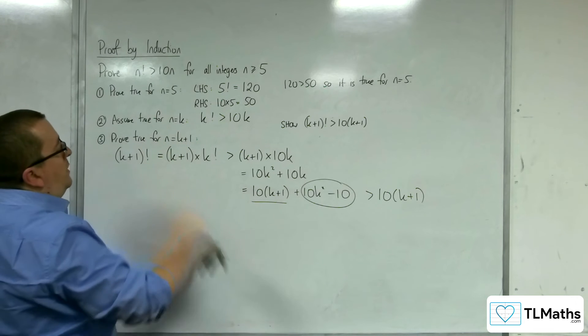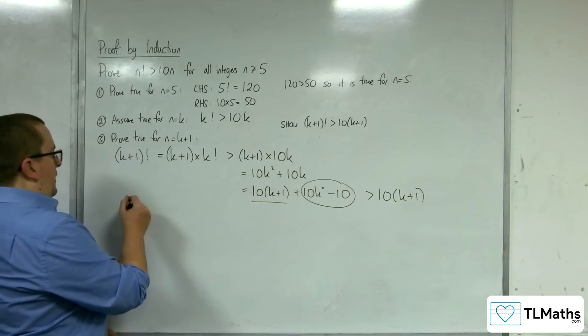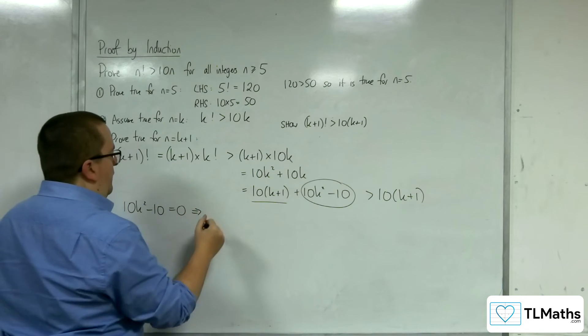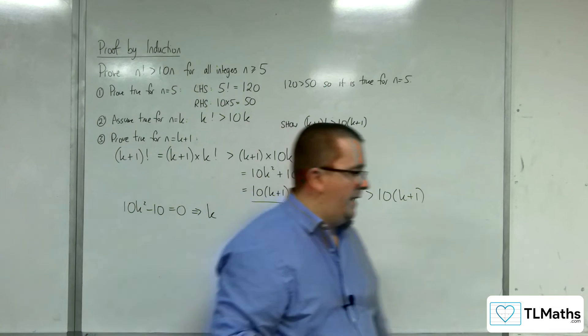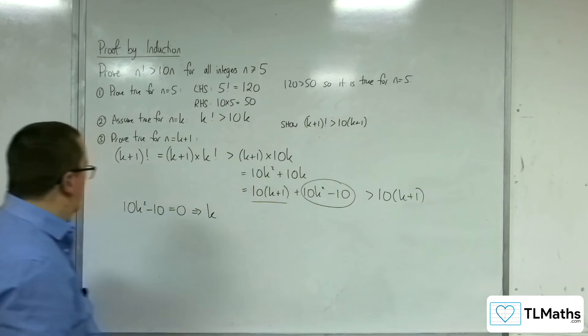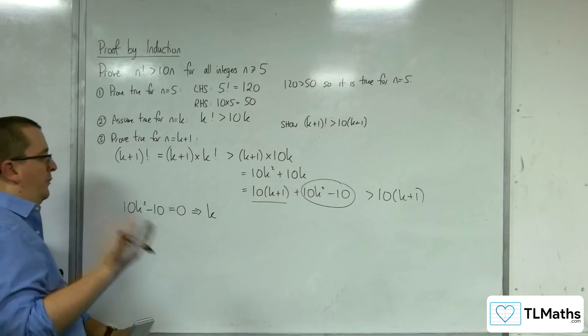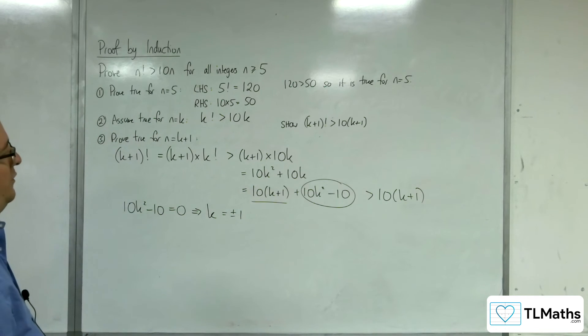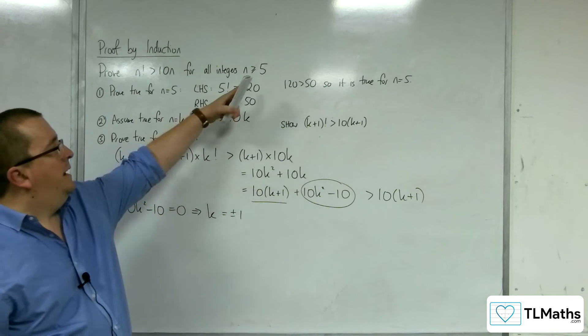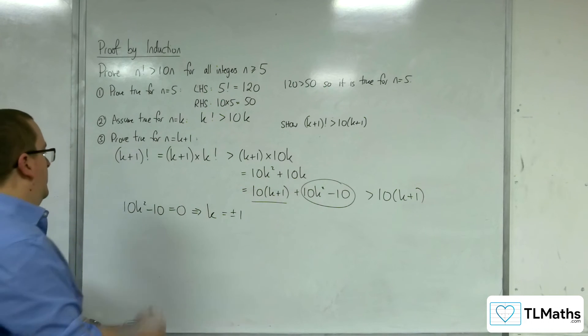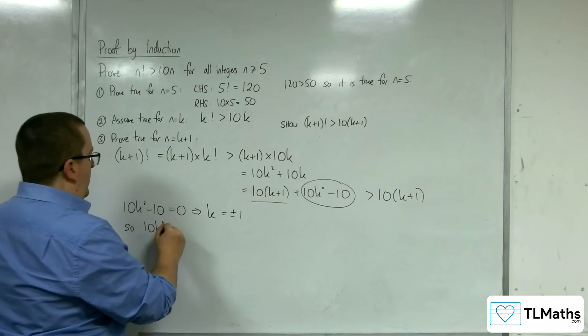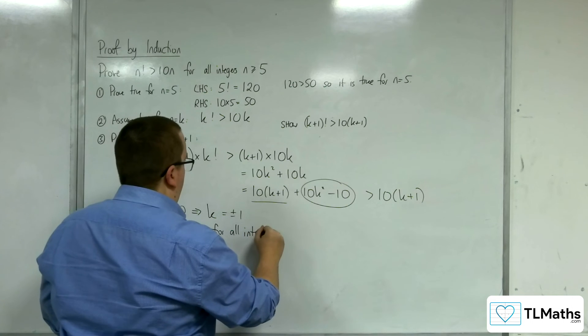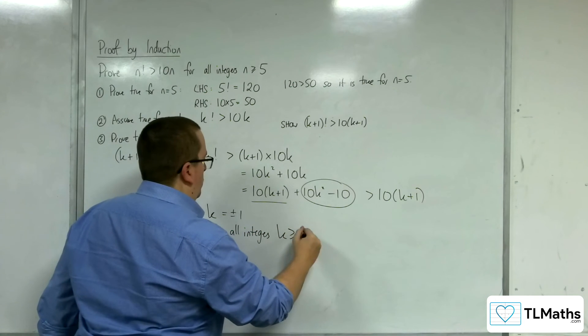So, remember, k is greater than or equal to 5. So, 10k squared minus 10 equals 0. If I'm to solve that, or actually divide through by 10, I get plus or minus 1. So, k is plus or minus 1. k is going to be greater than or equal to 5. So, 10k squared minus 10 is greater than 0 for all integers k greater than or equal to 5.